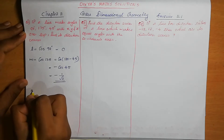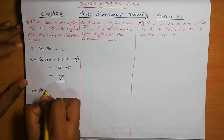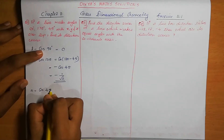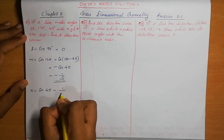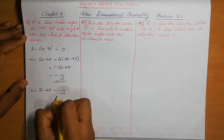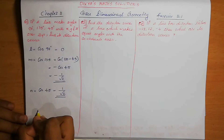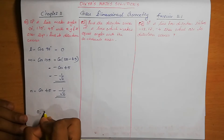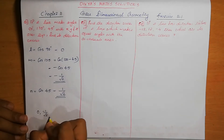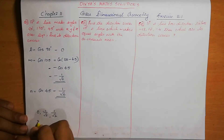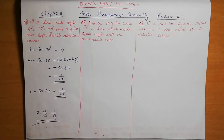Next, N is equal to cos gamma. The next angle is 45. Cos 45 is 1 by root 2. So the direction cosines of the line are 0, minus 1 by root 2, and 1 by root 2.